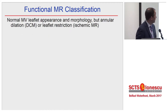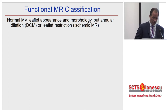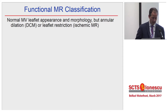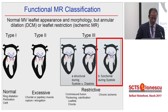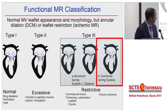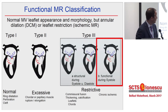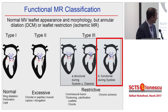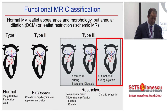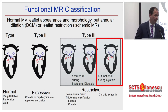Functional mitral regurgitation is where you have normal mitral valve leaflet appearance and morphology, but either pure annular dilatation as in dilated cardiomyopathy, or leaflet restriction for ischemic MR. The Carpentier type 3b is what we're talking about, where you have systolic restriction of leaflet motion.